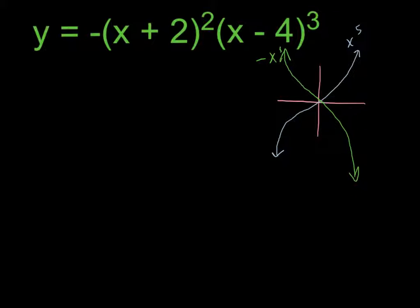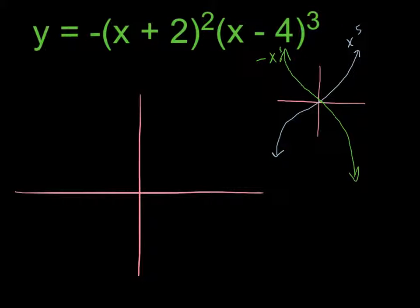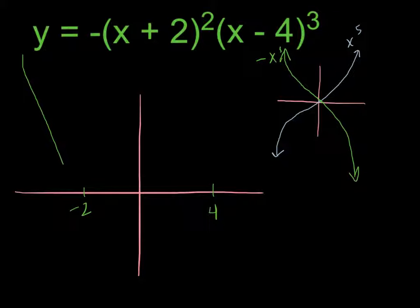Now we can create our graph with much more knowledge of what the function looks like. Let's identify our roots: one root at negative 2 and another at positive 4 — those are the only two roots. Using our basic shape, from left to right it's going to start up and decrease, hit the x-axis at negative 2. The question is: will it bounce back up, or dive down and pass through?